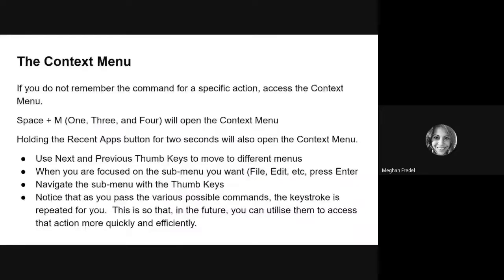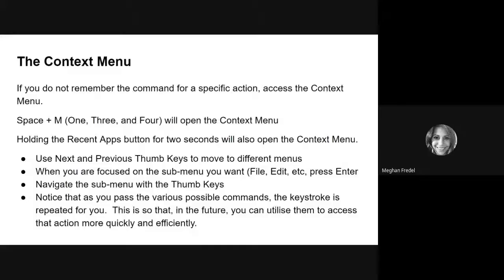Before we get started I want to remind everyone of two ways that you can access help if you get stuck or if you forget a command. If you don't remember a command for a certain keystroke or action, you can use the context menu by pressing Space+M, and that will open the context menu for you. You can also get into your context menu by holding the recent apps button for two seconds.